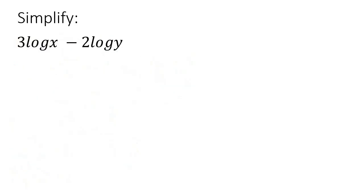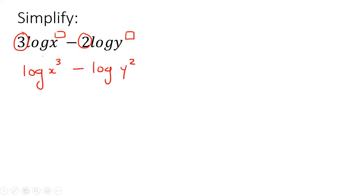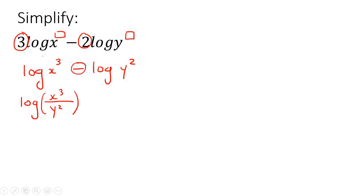Here's our last example. The first thing I would do is take this 3 and put it back as an exponent, and take this 2 and put it back as an exponent. That becomes log(x³) minus log(y²). Realize that this is a minus, so that goes with divide: log(x³/y²).